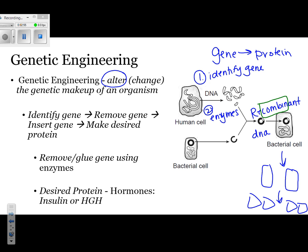The next section looks at the steps of genetic engineering. You identify the gene, you remove it using enzymes, then you paste it — also using enzymes — and then you're able to make your desired protein. The desired protein that they most likely will ask about on the Regents could include things like hormones, insulin (which is a type of hormone), or HGH, which is an abbreviation for human growth hormone.